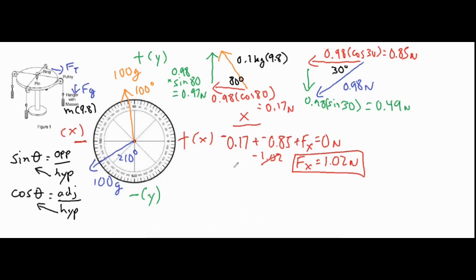Now if we're handling all of the y components, we have 0.97 newtons which is going upwards, so I'm going to leave that positive. And then we have 0.49 newtons which is going downwards, so we'll call that negative. Plus some kind of y component that we want to balance out everything.